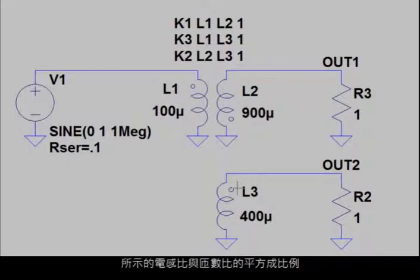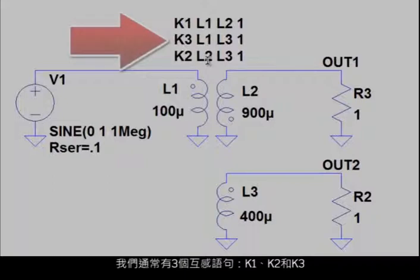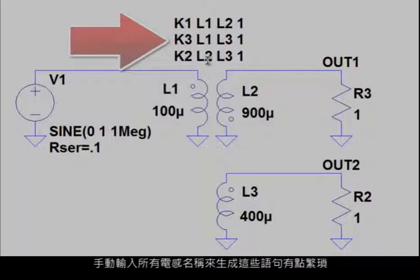The inductance ratios shown are proportional to the square of the turns ratio. A transformer with these three windings will usually have three mutual inductance statements, K1, K2, and K3. Entering all these inductor names by hand to generate these individual statements is a bit tedious.